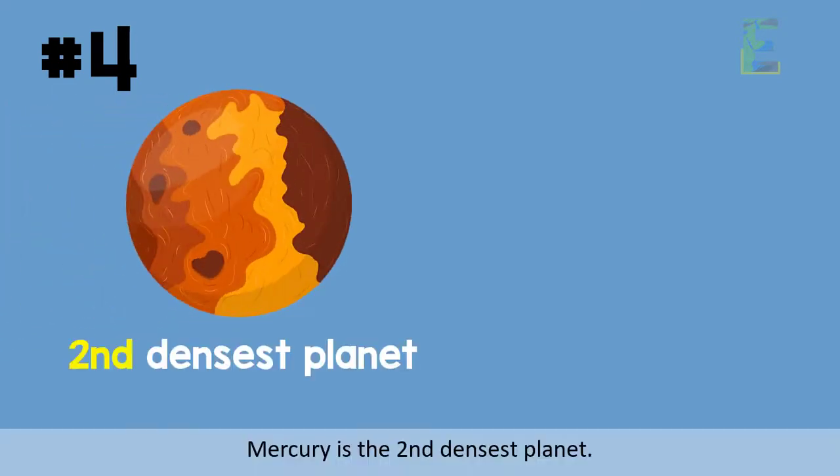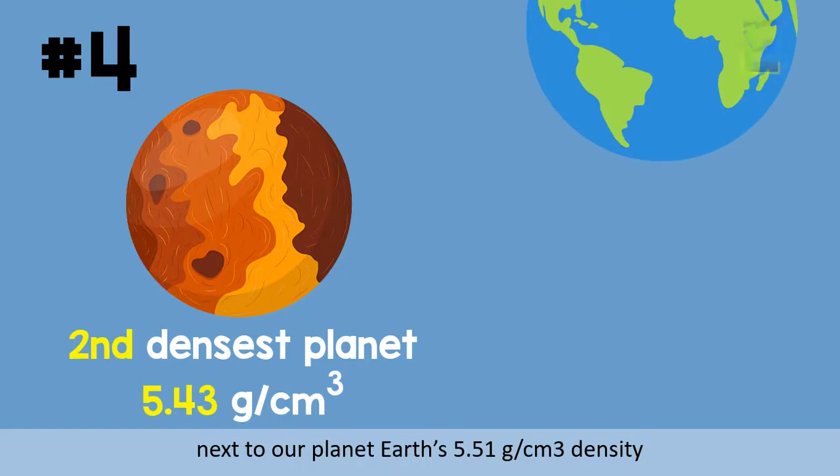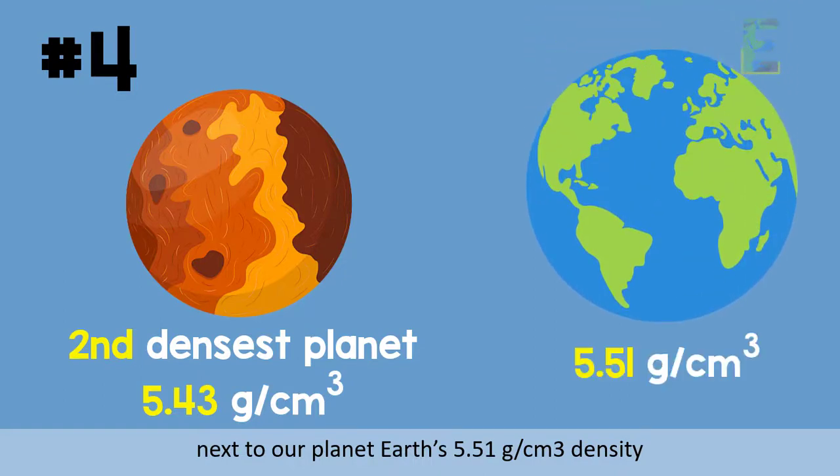Number 4. Planet Mercury is the second densest planet. Mercury has a density of 5.43 grams per cubic centimeter next to our planet Earth's 5.51 grams per cubic centimeter density.